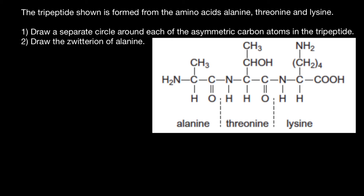Hello and welcome to Nikolai's genetics lessons. Today's problem is the tripeptide shown, which is formed from the amino acids alanine, serine, and lysine. The first question: draw a separate circle around each of the asymmetric carbon atoms in the tripeptide.